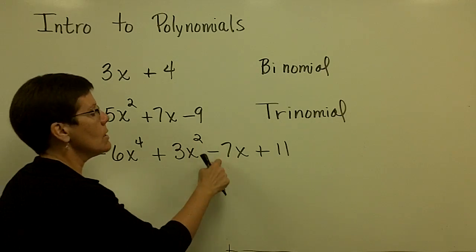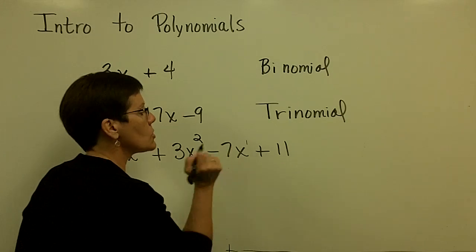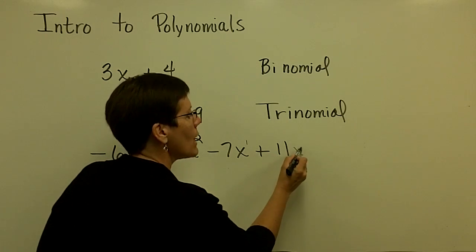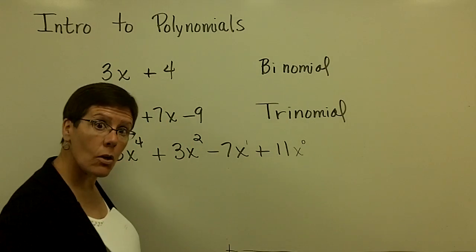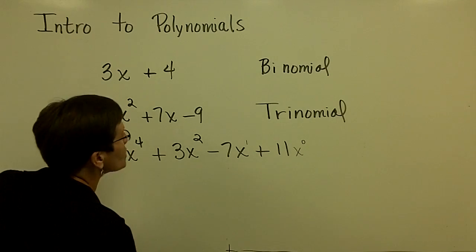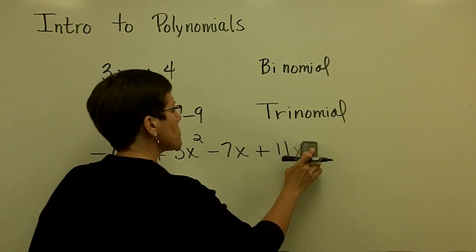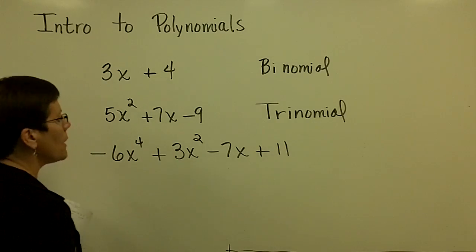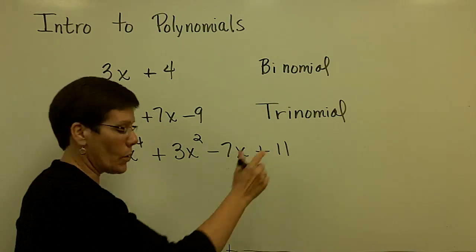That's the second largest. This one has an exponent that's understood to be a 1. And if you wanted to, you could tack an x⁰ on that one, and that's the smallest degree. So I don't tend to write those. So we should write it in descending order.